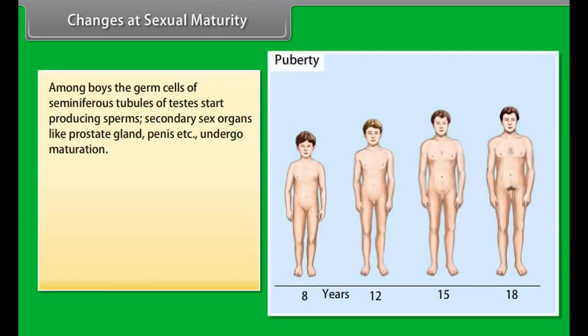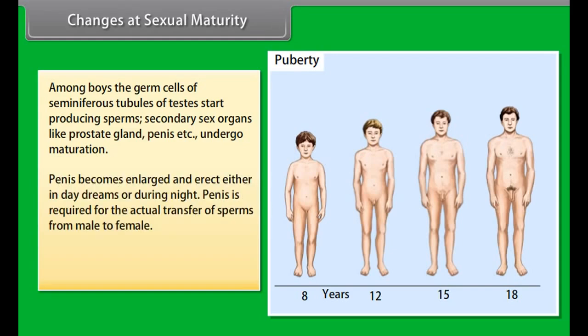Among boys, the germ cells of seminiferous tubules of testes start producing sperms. Secondary sex organs like prostate gland, penis, etc. undergo maturation. Penis becomes enlarged and erect either in daydreams or during night. Penis is required for the actual transfer of sperms from male to female. Other changes include broadening of shoulders, deepening of voice, and increase in height.